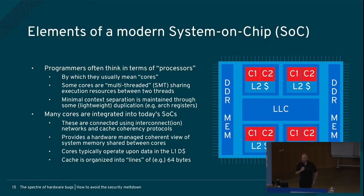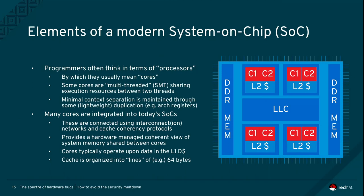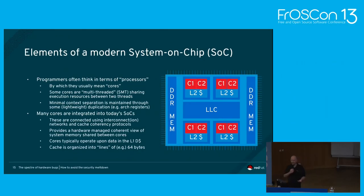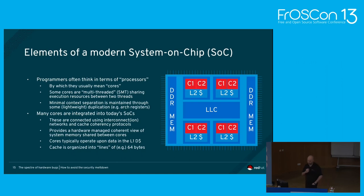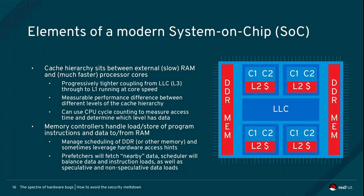Microarchitecture is really concerned with the realization of an architecture in hardware. If you're a programmer, you typically think in terms of processors — the chip inside your machine, the cores. The average machine today is multi-core. Some of these cores are multi-threaded: they partition the resources inside the core to make it look like they have additional cores called threads. There are many of these cores integrated into today's system on chip, with fancy interconnects connecting all the pieces together. Cores operate on data contained in caches.